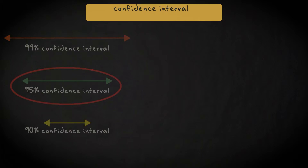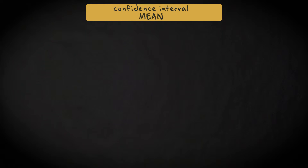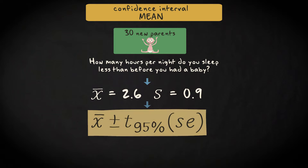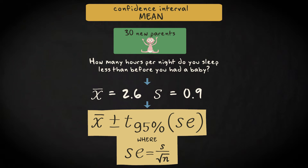We can also use other confidence intervals when constructing the confidence interval to estimate the population mean. Suppose we've asked a sample of 30 new parents in Amsterdam how many hours of sleep they've lost after their first child was born. The mean is 2.6 hours per night and the standard deviation is 0.9 hours per night. The formula to construct the 95% confidence interval is X-bar plus and minus the T-score for the 95% confidence level times the standard error, which equals the sample standard deviation divided by the square root of the sample size.